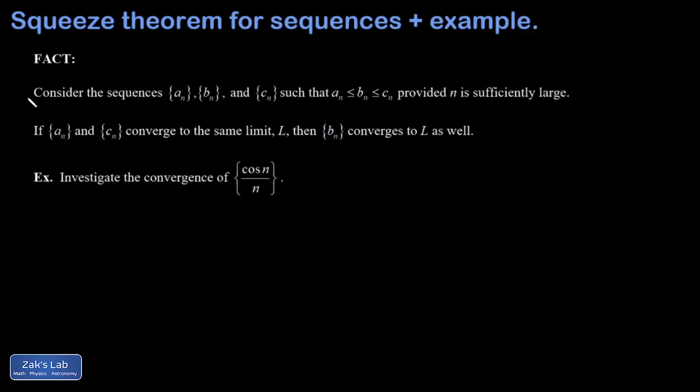This tends to look a little overwhelming, but all I'm saying here is consider three sequences where the terms of the BN sequence are always trapped between the terms of the other two. The terms of BN are bigger than the terms of AN or possibly equal to it, and the terms of BN are less than or equal to the terms of CN.